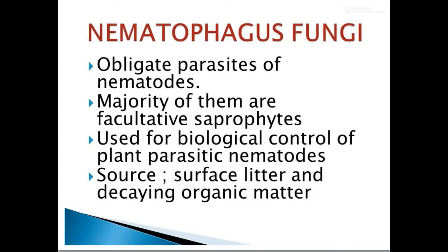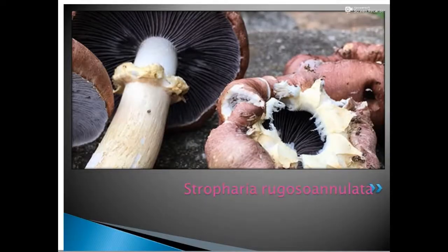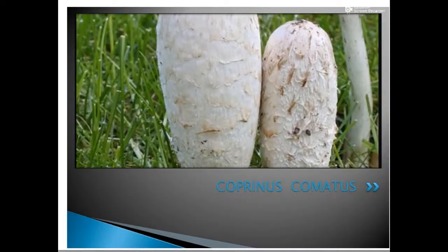Many of these nematophagous fungi are obligate parasites of nematodes, while the majority are considered facultatively saprophytic. They have been used for the biological control of plant parasitic nematodes and can be found on surface litter as well as in decaying organic matter. Examples include Stropharia rugosoannulata and Coprinus comatus. Further details will be covered in coming sessions.